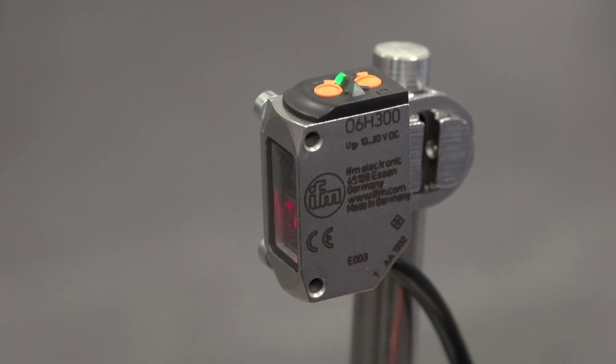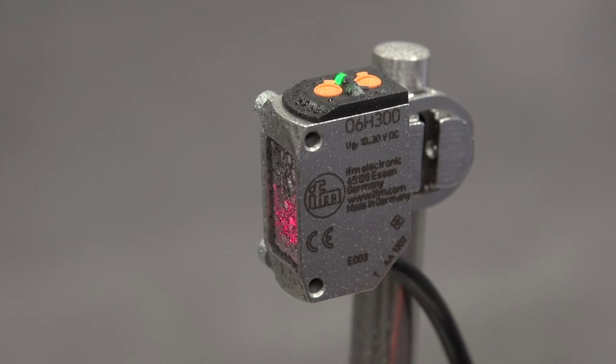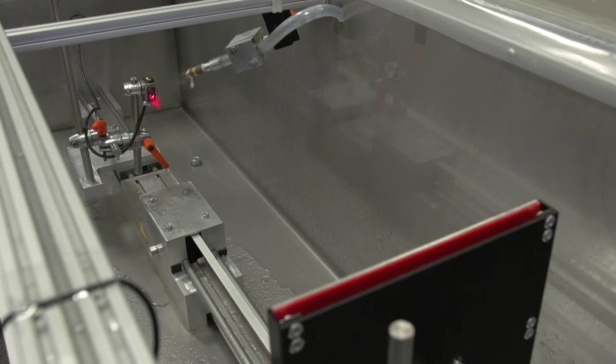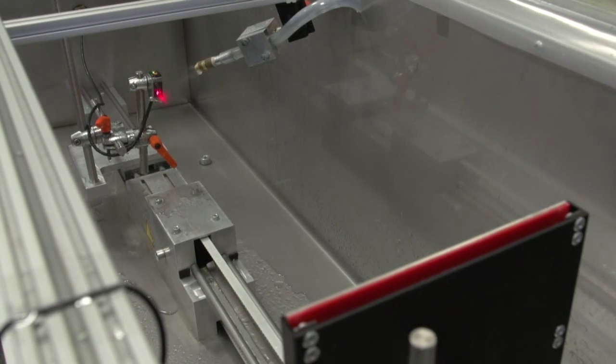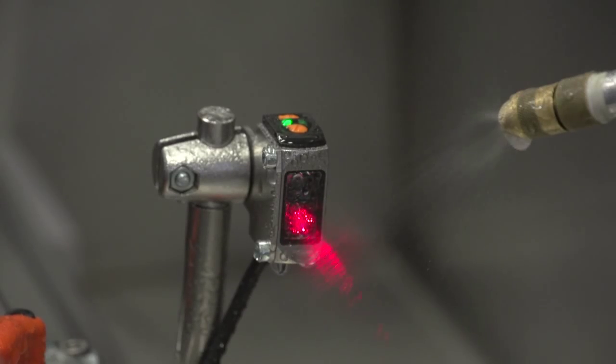Small compact photocells of the O6 Wetline series. Powerful photoelectric sensors ready for use for the special requirements of the food industry.